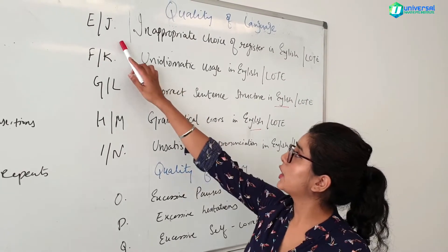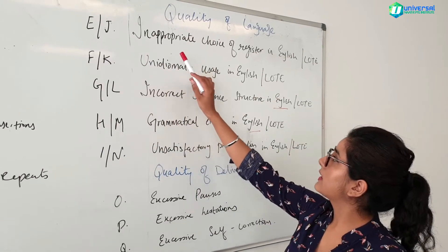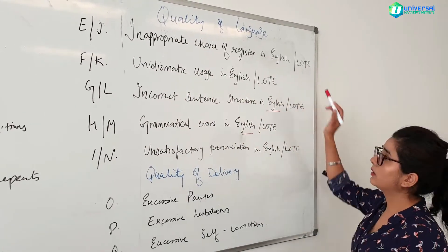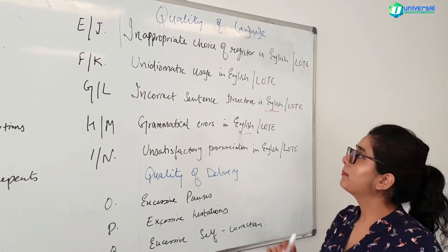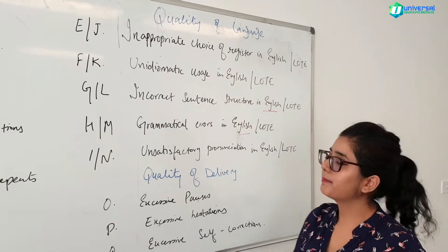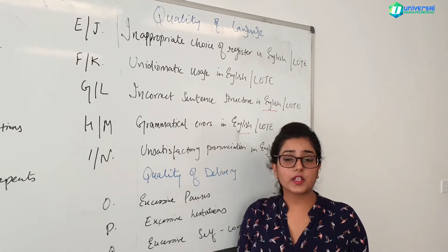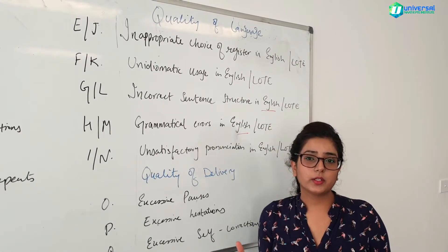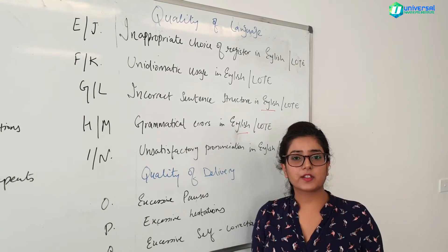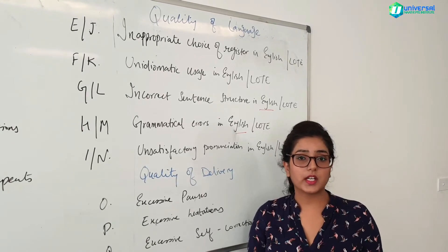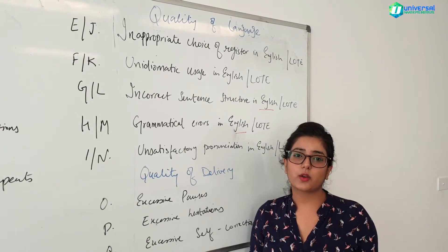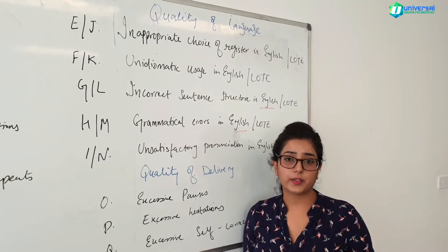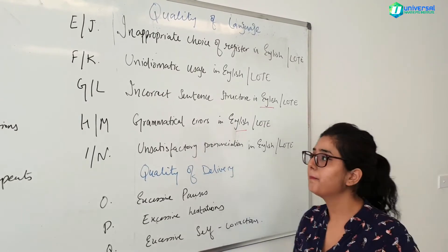Codes E and J refer to inappropriate choice of register in English and the language other than English. Basically, this means the words you've used are informal. When you speak with your friends you use slang and informal words — those things are not allowed in the NADI exam. You have to be very formal when you're speaking in the exam.